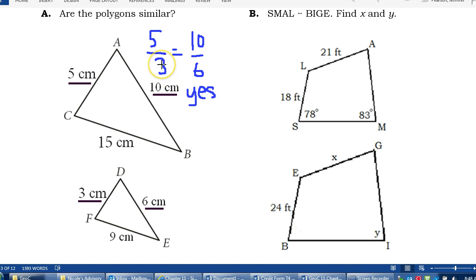Alternatively, you could pretend that one of these is blank. If I hide the 3, then I would do 5 times 6, that's 30. 30 divided by 10 and that gives me my answer of 3. But as long as I can check this proportion is true, then yes, these are similar. If any of my pairs come out as not equal, then no, they're not similar.